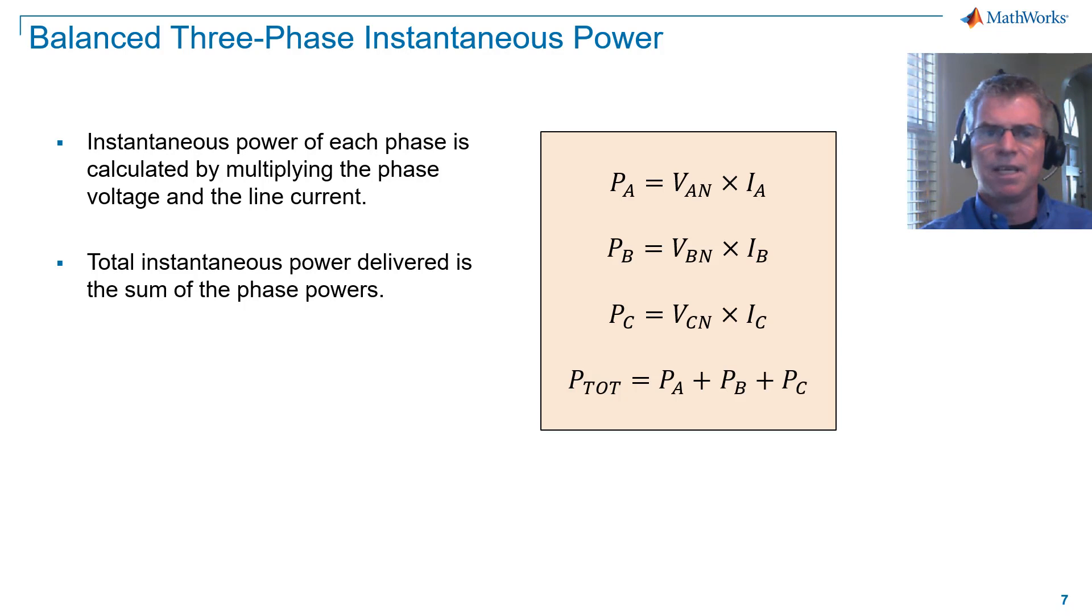Instantaneous power of each phase is calculated by multiplying the phase voltage and the line current. Total instantaneous power delivered is the sum of the phase powers.